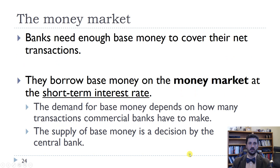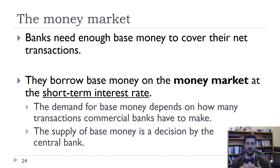Sometimes banks need to borrow reserves in the short term through the money market, which is a place where banks can borrow and lend base money — what we call reserves in the United States, or federal funds. How much base money there is is a decision by the central bank, and that's going to influence what we call the policy rate, which we'll talk about more in the next video.